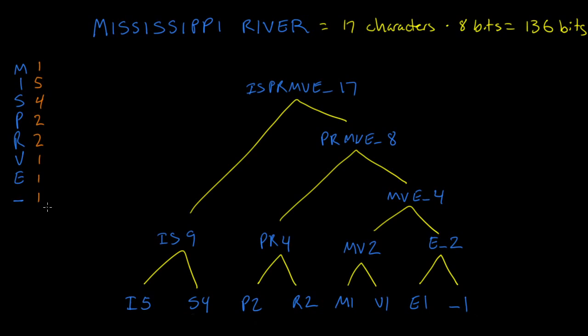The last thing we're going to do to the tree to complete the construction is to label the left and right-hand sides of each of the branches with a zero and one. Zero, one, zero, one, zero, one. And that completes the construction of the tree.